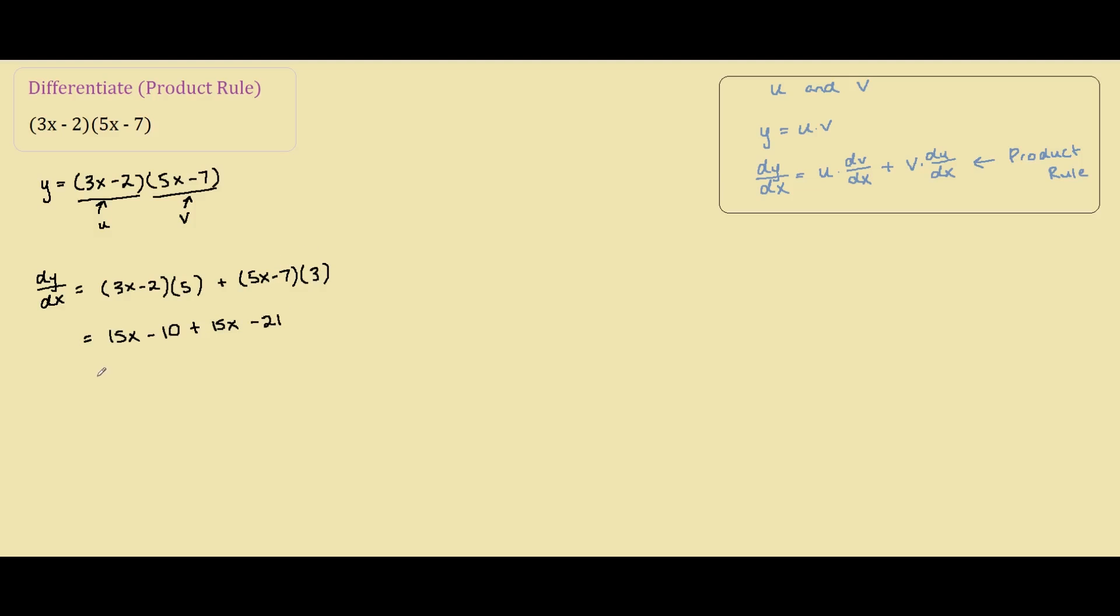So simplifying further, you have 15x plus 15x is 30x and negative 10 minus 21 is negative 31.